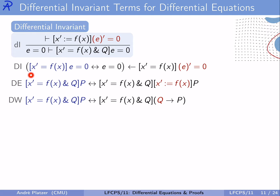Recall from the previous chapter proving equational postconditions E = 0 of a differential equation using the differential invariance proof rule. This derives from the differential invariant axiom for equations, the differential effect axiom, and now the differential weakening axiom to handle evolution domain constraints. The differential invariant axiom says: E = 0 always holds true after a differential equation if and only if it holds true right now, provided we already know that E' = 0 always after the differential equation. Where do evolution domain constraints enter? If the differential equation has one, we should be able to assume it in the induction step.